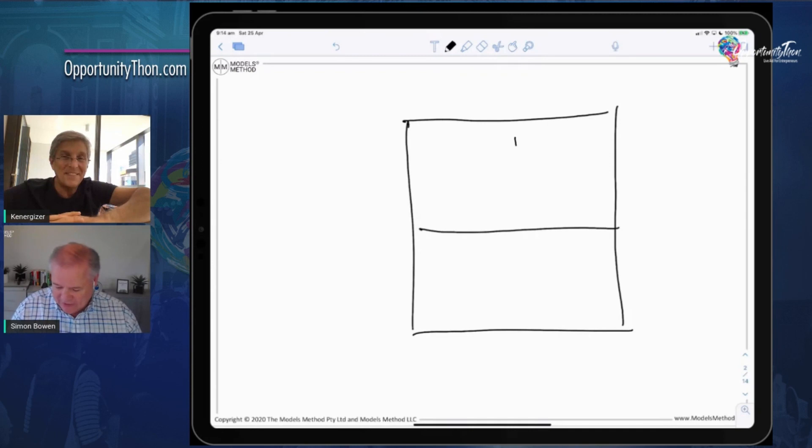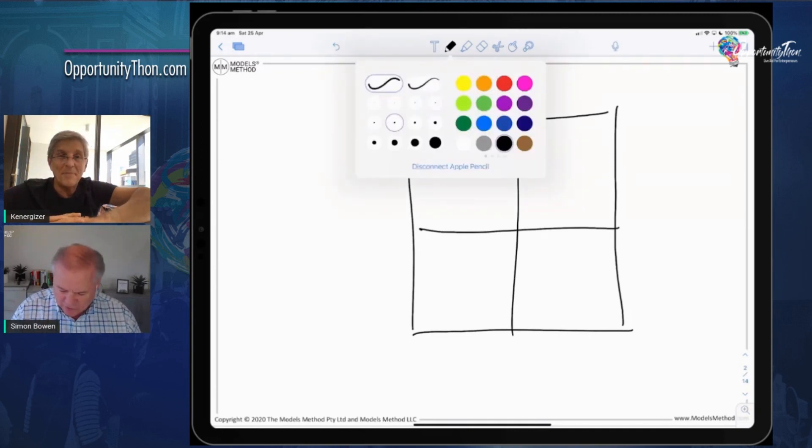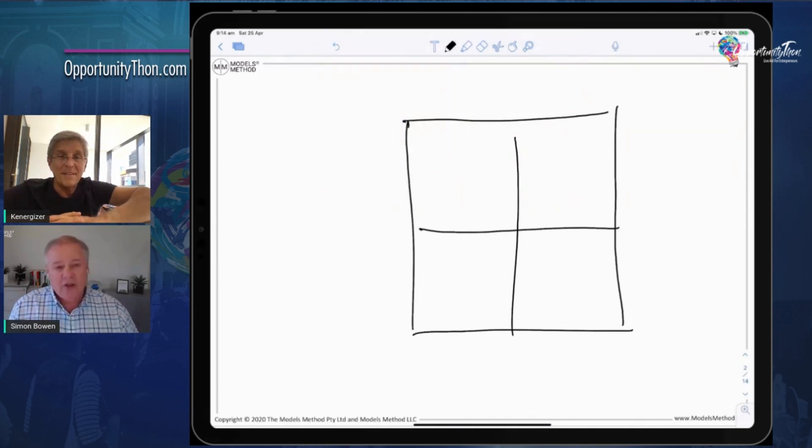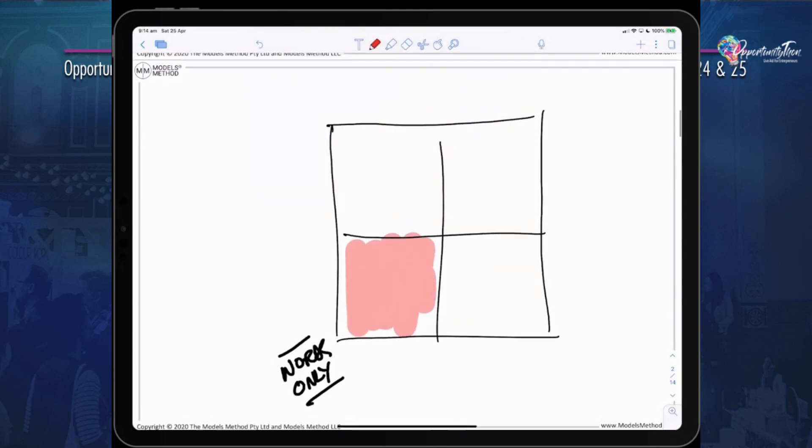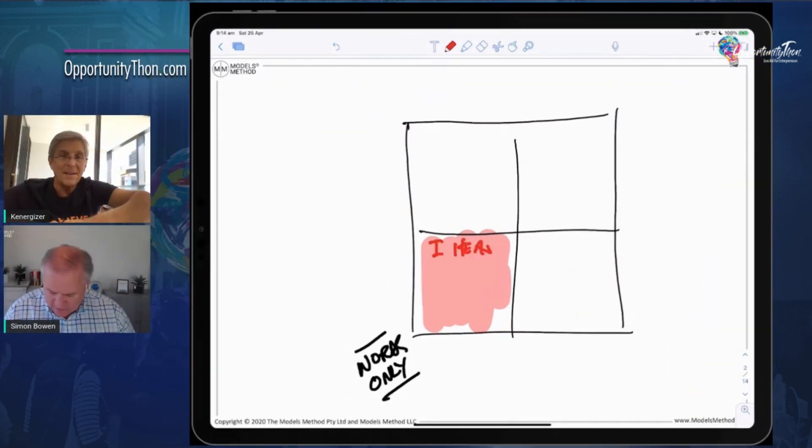So let's look at a model that explains models, or in fact two models that explain models. When there's something that needs to be communicated to people, we often just resort to words only. We do that in copy, text on paper, or we just speak words only. And when we do that, it's like a red zone. So what happens is people say, 'Oh, I hear you.' And really that translates into, 'It's just noise.' And boy, there's a lot of noise around.